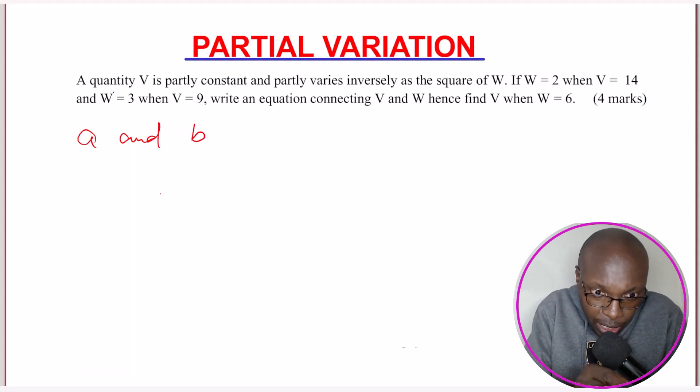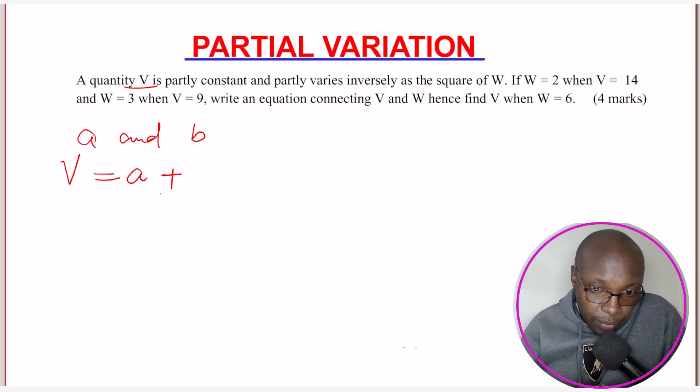So let us write this. A quantity V, V is partly constant, is partly constant. This is why you introduce the first constant. So A is partly constant and partly varies and you're going to add this. Partly varies inversely as the square of W. So you introduce the second constant.